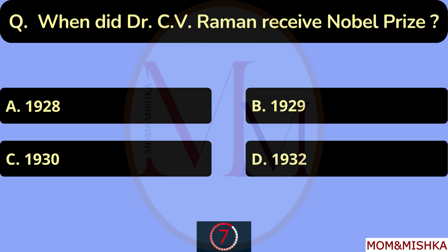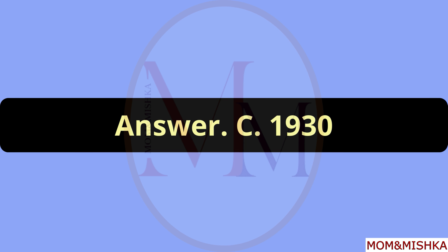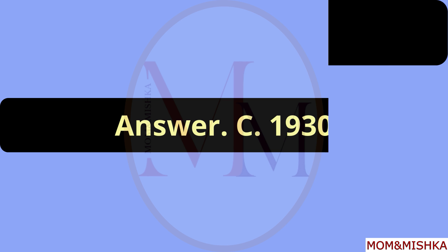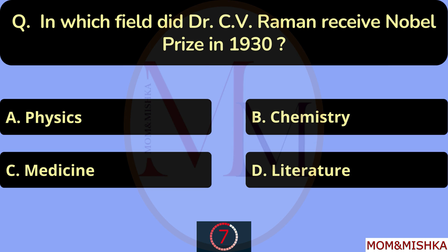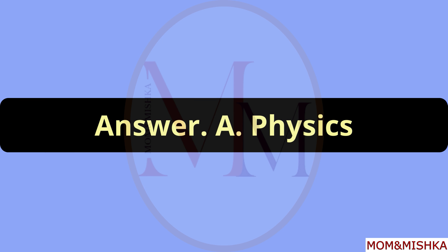When did Dr. C.V. Raman receive the Nobel Prize? In year 1930. Option C. In which field did Dr. C.V. Raman receive the Nobel Prize in 1930? In Physics. Option A.